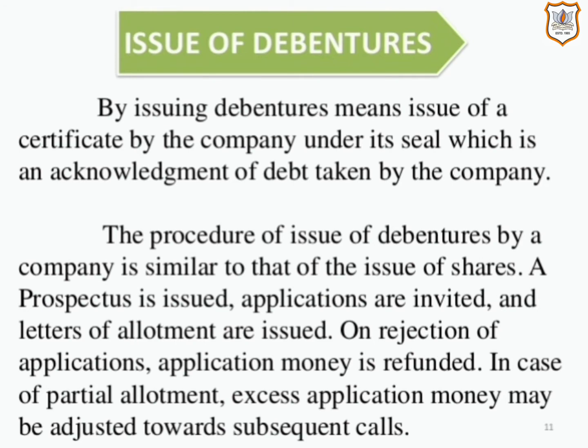Now let us see what is the issue of debentures. Issuing debentures means the issue of a certificate by the company under its seal, which is an acknowledgement of debt taken by the company. The procedure is similar to that of the issue of shares — a prospectus is issued, applications are invited, and letters of allotment are issued. On rejection of applications, the application money is refunded; in case of partial allotment, excess application money may be adjusted towards subsequent calls.